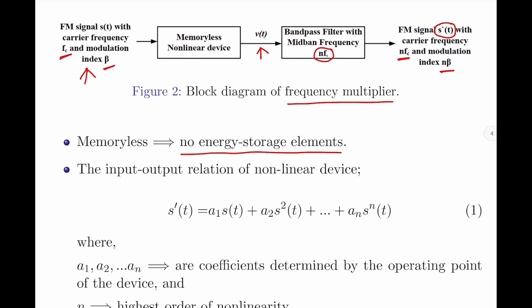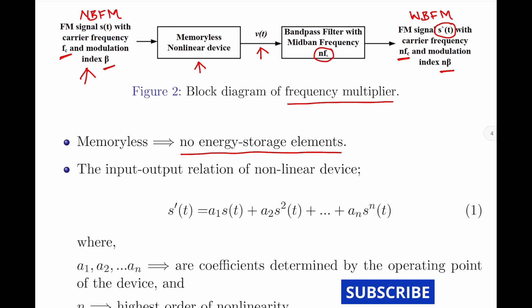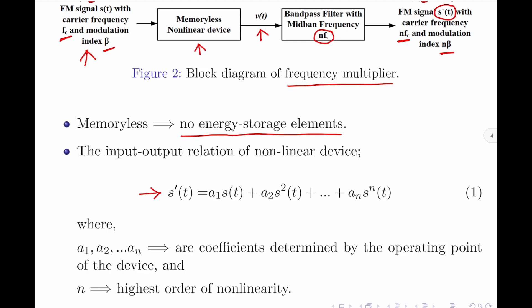In general, the input to the frequency multiplier is a narrow band frequency modulated signal and the output is a wide band frequency modulated signal. The input-output relation of the memoryless non-linear device can be expressed as: S'(t) = A1·S(t) + A2·S²(t) + … + An·Sⁿ(t), where A1, A2, …, An are coefficients determined by the operating point of the non-linear device, and n is the highest order of non-linearity.